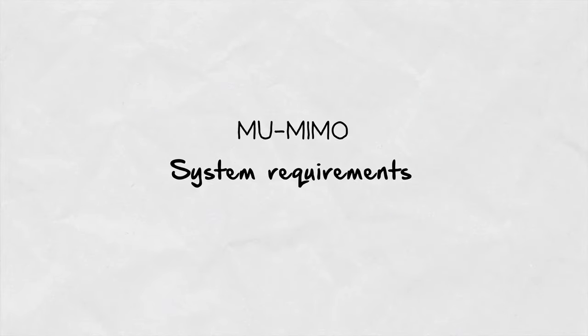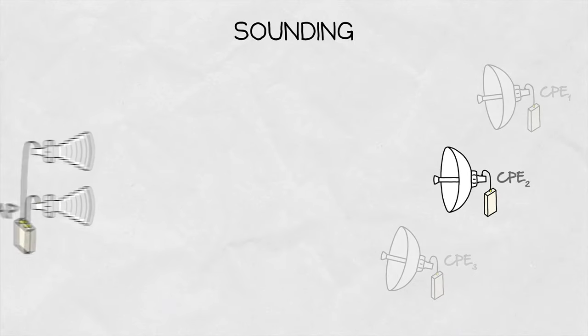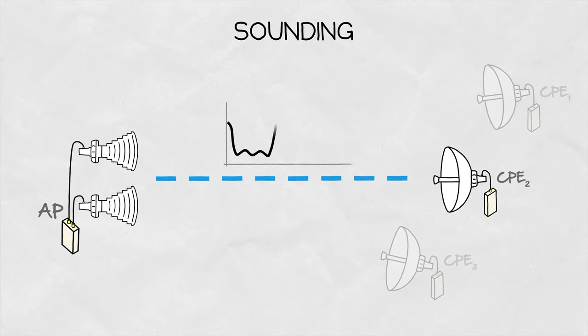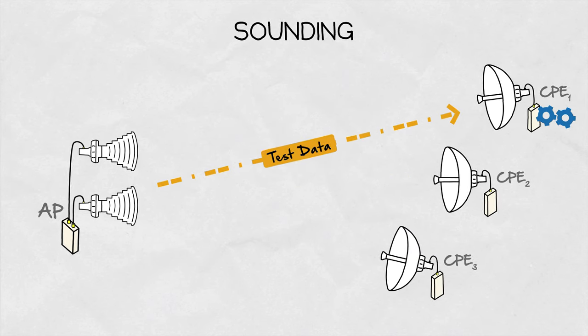There are two major differences between the single and multi-user MIMO on system level. First is the channel state information, or sounding. Before the link with each CPE can be established, the access point needs to know how the propagation channel to each CPE looks like, so the access point sends test data to every client station.